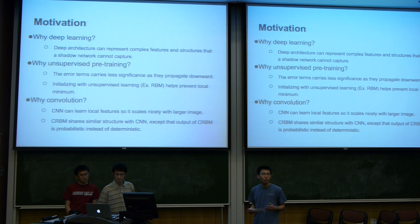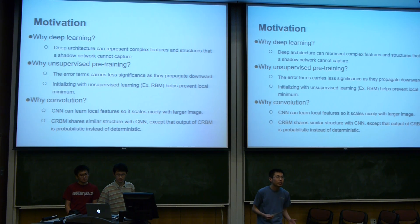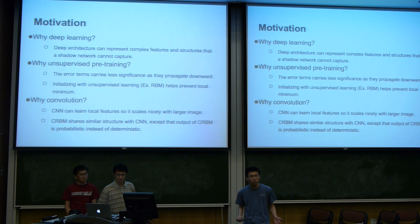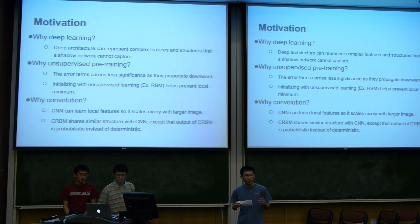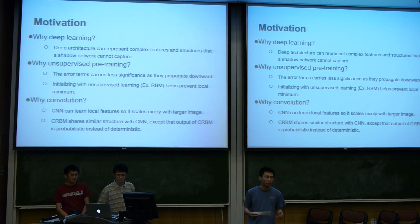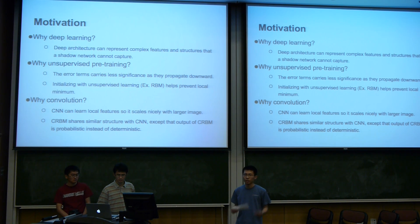The next question is why use convolution? It's basically for efficiency. Just like the human eye has a local receptive field, our network has locally connected neurons — basic kernels. Therefore, we have the convolutional neural network, or CNN. Our work is in developing techniques to combine the convolutional RBM with the CNN, so that it gets much better results.